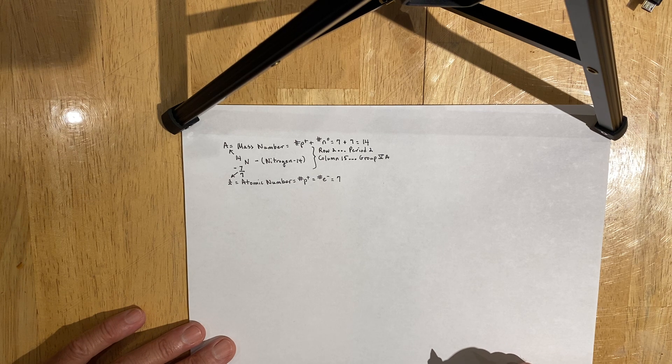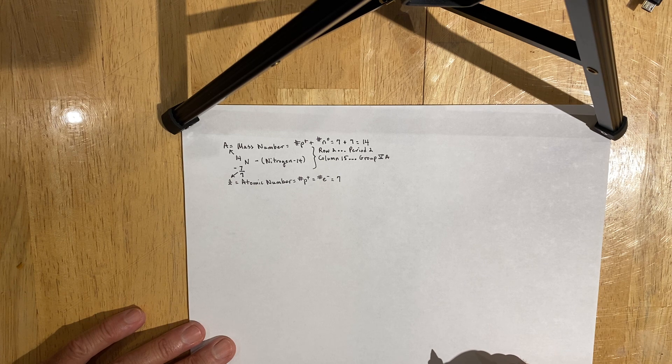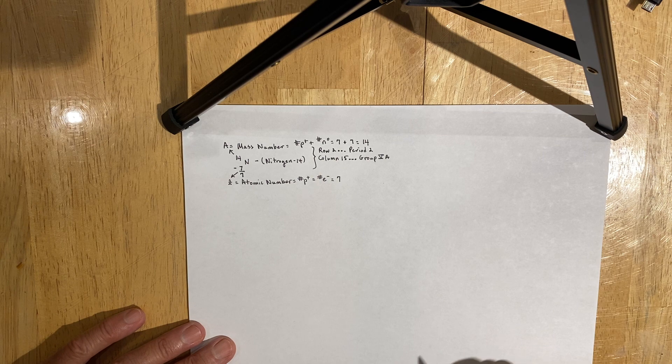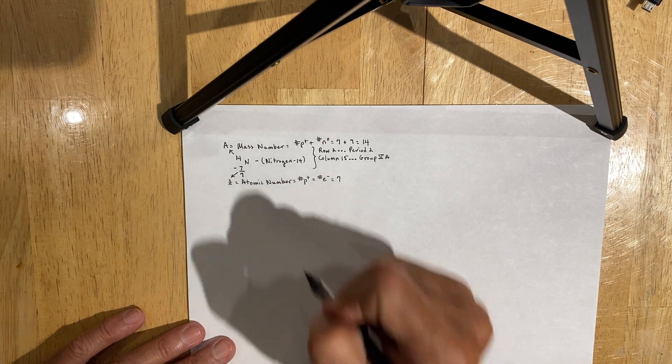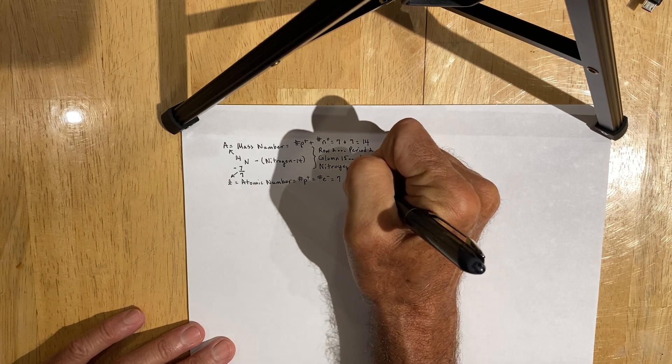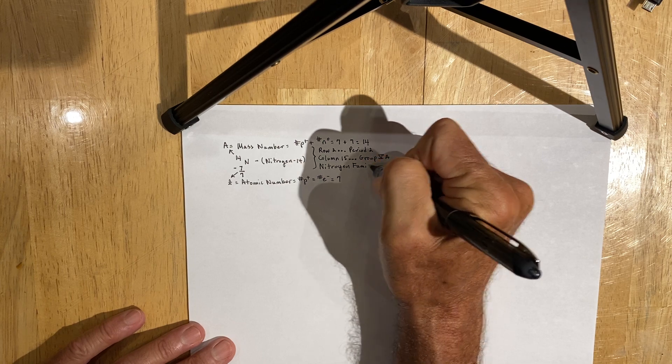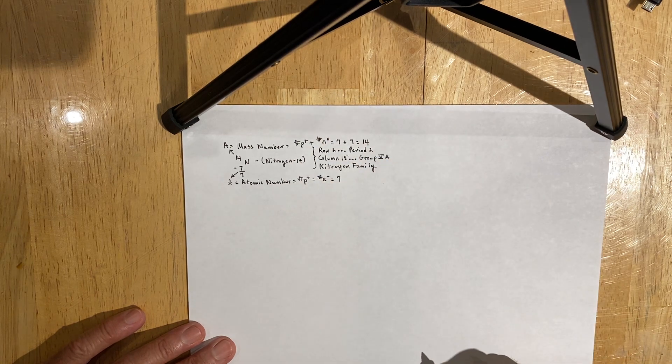And there is no official family for the family that nitrogen is in. However, since it's at the top of column 15, or group 5A, we name it after itself and say all the elements in that column are from the nitrogen family of elements.